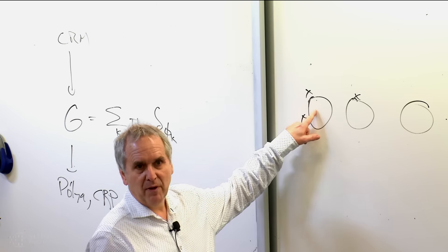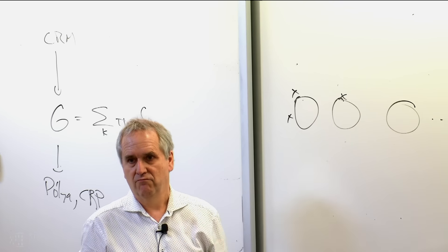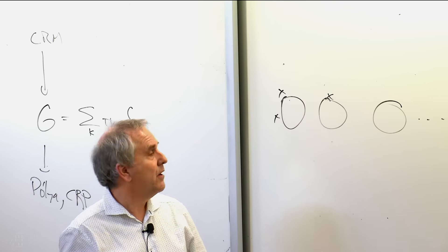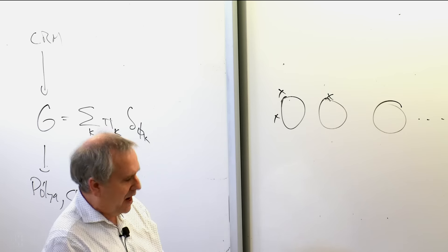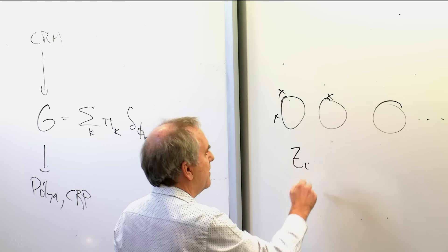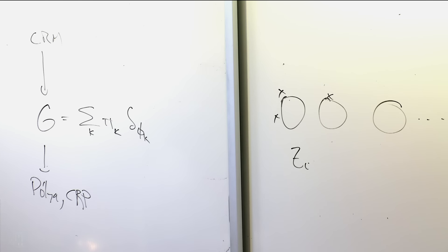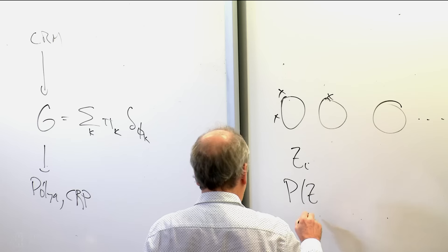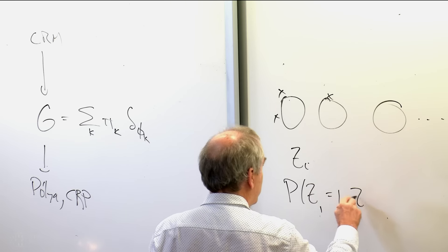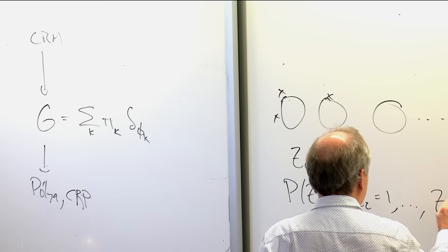The first person sits at the first table with probability one, so let's forget about that. From the second person on, let Z_i be indicators denoting whether you sit at the first table or not — those two possibilities. Let's consider the probability that everybody sits at the first table: Z_1=1, Z_2=1, …, Z_n=1, up to some n.